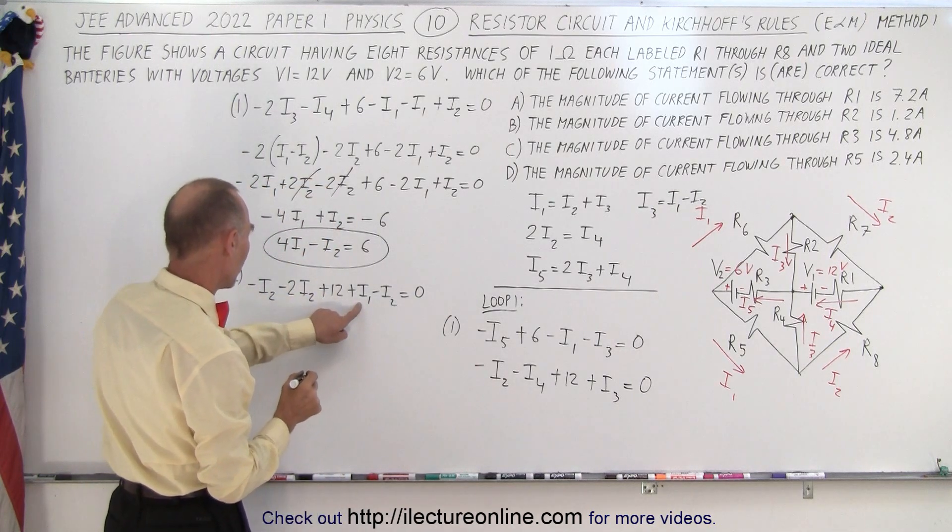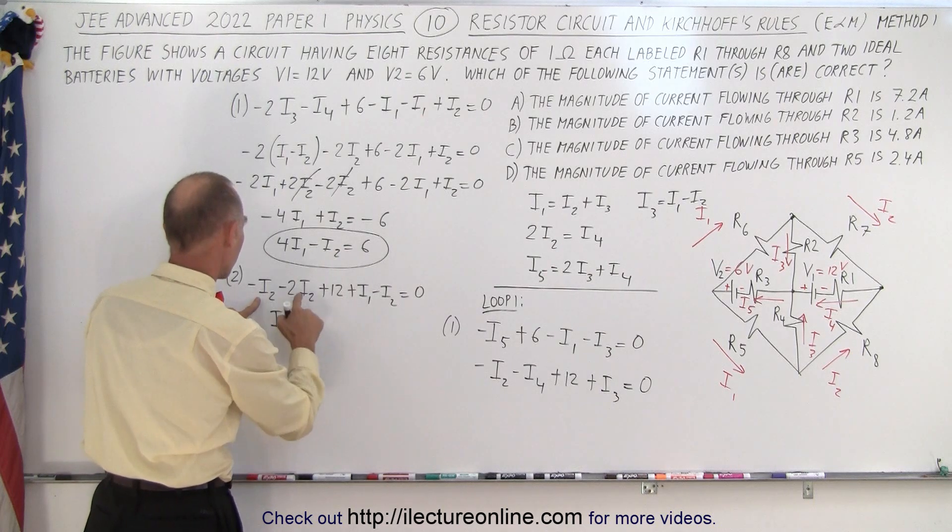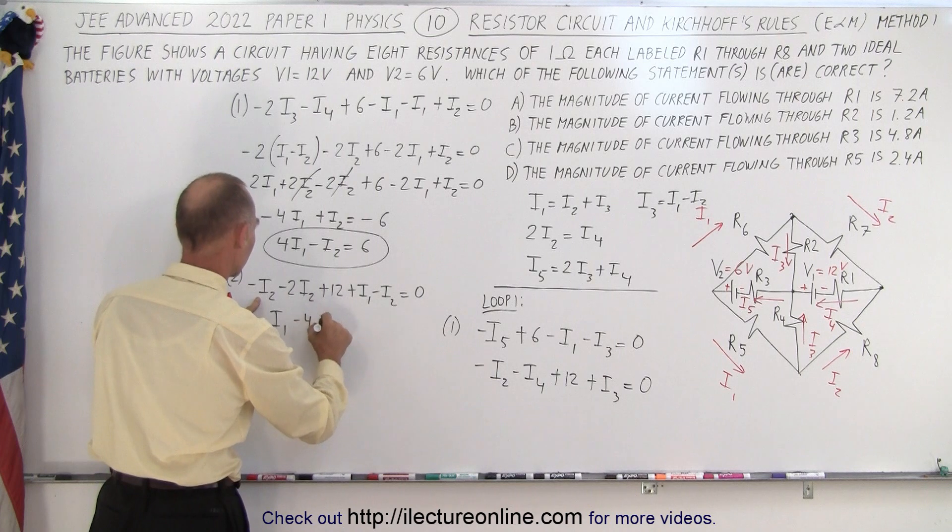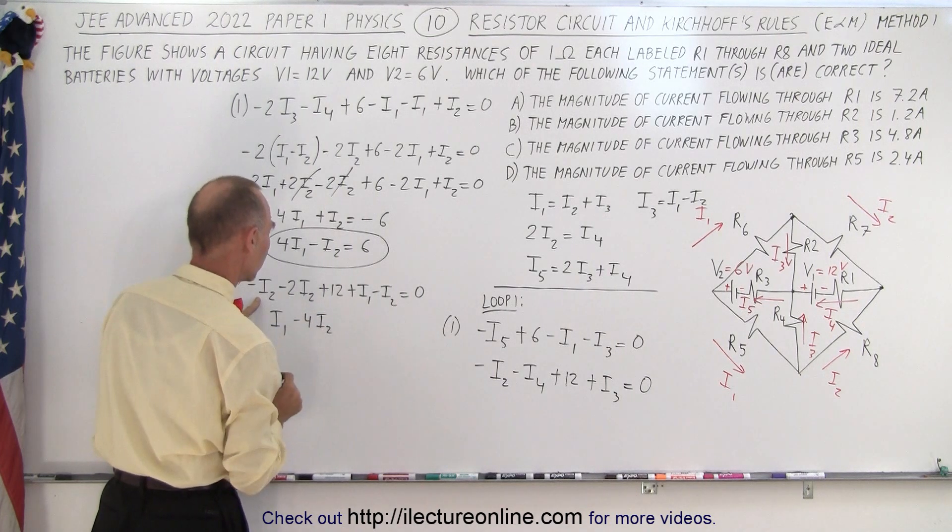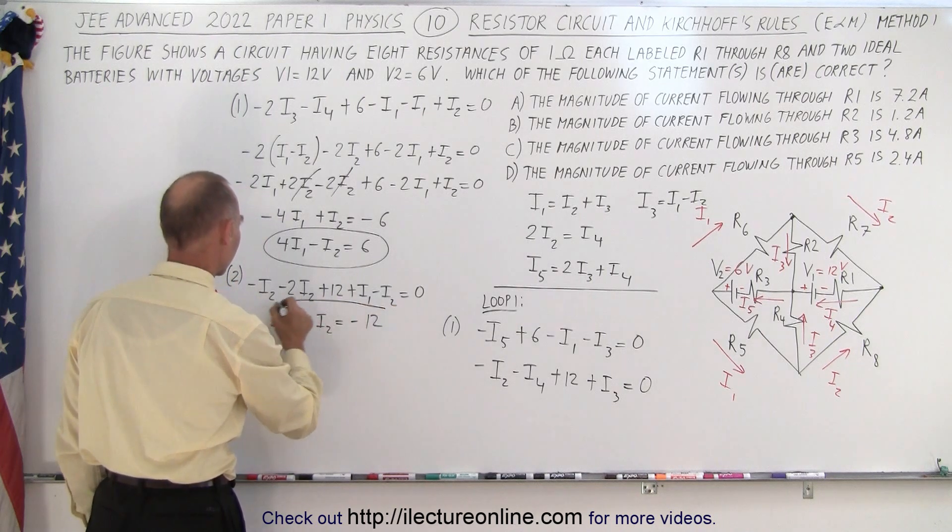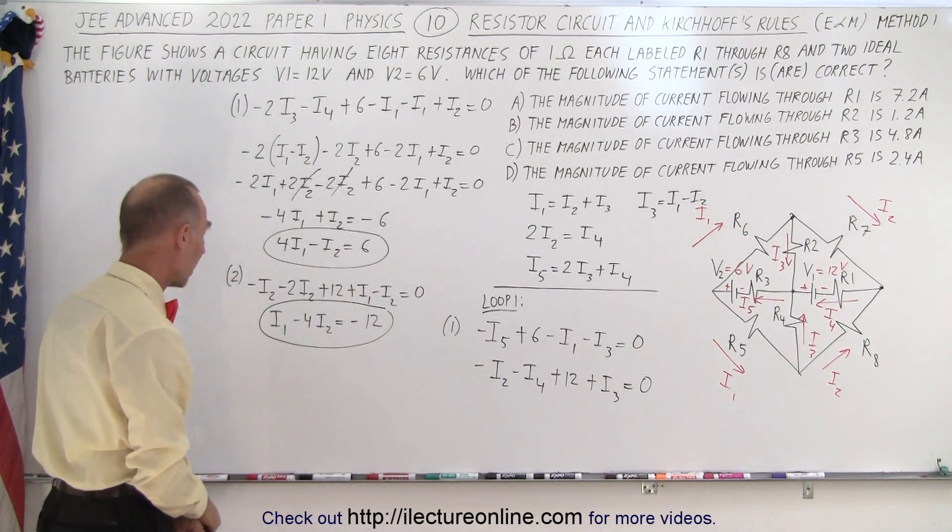So we have 1I1, minus I2, minus 2I2, that's minus 3I2, minus 1 is minus 4I2, equals negative 12. There's my second equation. So I have two equations, two unknowns, I should be able to solve for I1 and I2.